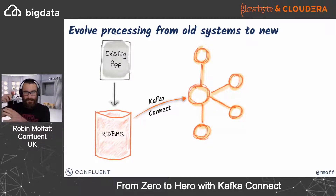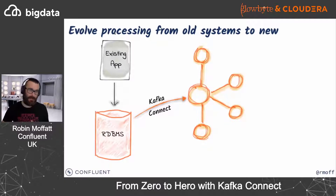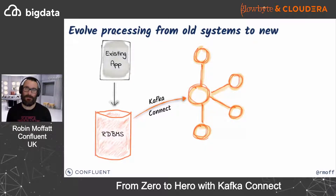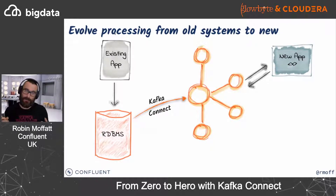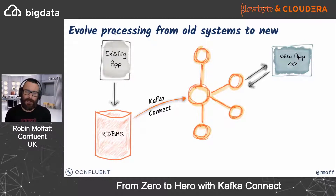Kafka Connect also fits in very well when we're starting to evolve existing applications and want to move towards newer microservices-based approaches. Many existing applications are built around databases — an order gets created, a customer changes, inventory moves, and it gets written to a database. Those changes in a database we can capture using Kafka Connect and stream into a Kafka topic or sets of topics, and from that we can drive our new applications — building event-driven applications using Kafka as the broker, driven by events captured out of existing systems.